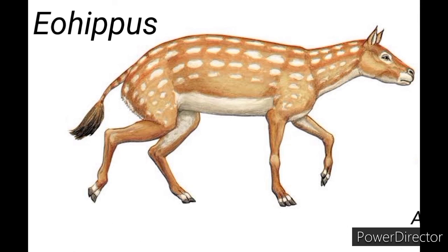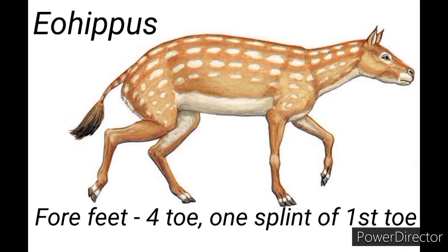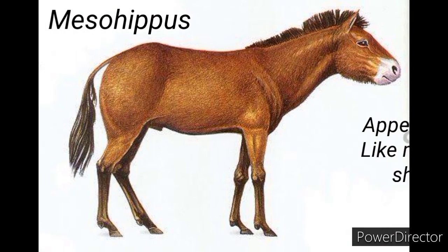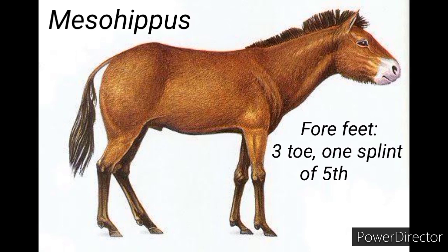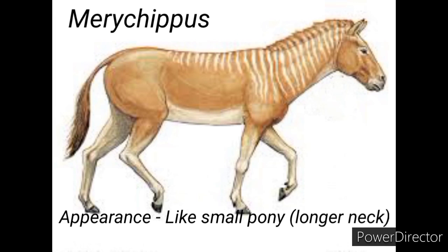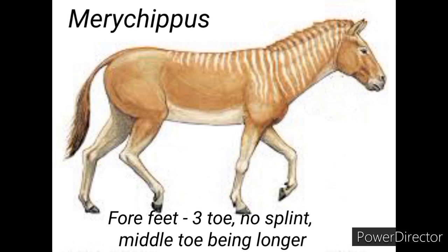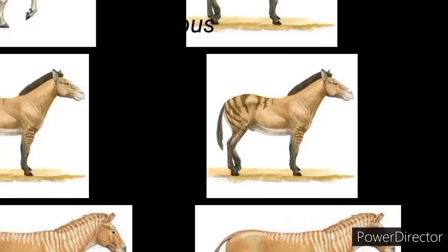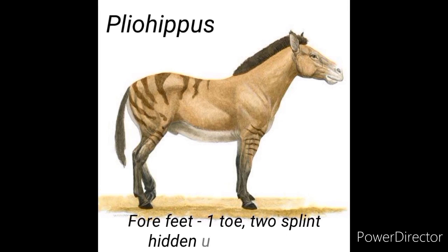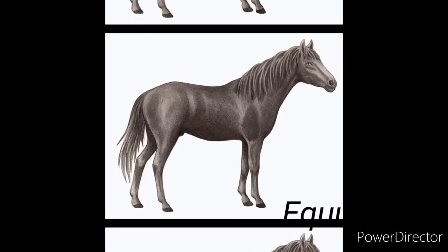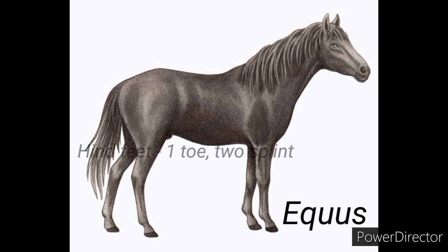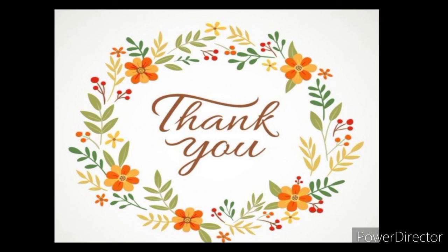The evolutionary history of horses begins with Eohippus, height 30 cm, fox-like appearance, short head and neck, forefeet with 4 toes and 1 splint, hindfeet with 3 toes and 2 splints. Later forms show height increasing to 100 cm with a small pony appearance, forefeet and hindfeet with 3 toes. Then height 120 cm resembling a modern pony with 1 toe and 2 splints hidden under the skin. Finally height 150 cm with modern horse appearance, long head and neck, 1 toe and 2 splints on all feet.